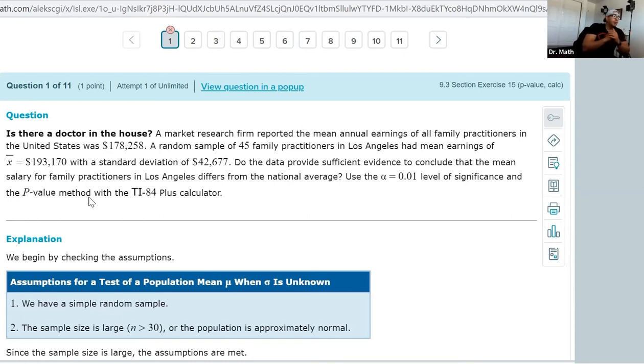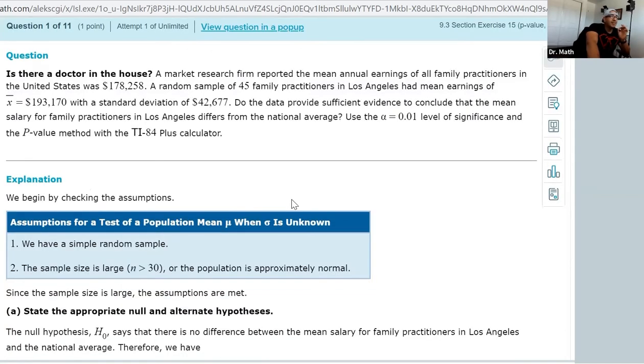When we're running through this, of course we're going to assume that we have a simple random sample and we want to make sure that our sample size is large enough. We want to make sure that n is greater than 30, which it is. But if it wasn't, then you would need to make sure that your distribution is approximately normal. Lucky for us, our sample size is 45.